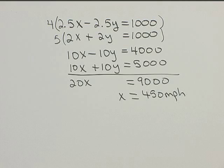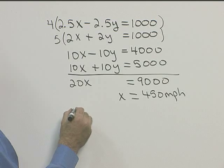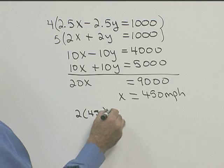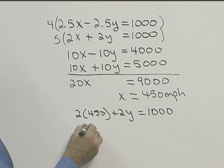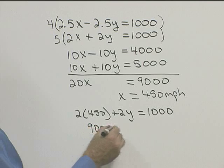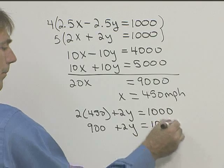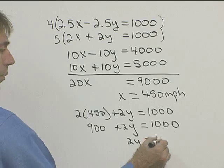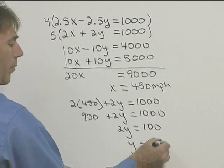Well now we need to find the speed of the wind. So let's take our second equation, which is 2X plus 2Y equals 1,000. So we'll have 2 times 450 plus 2Y is equal to 1,000. We'll have 900 plus 2Y is equal to 1,000. Subtracting 900 from both sides, we get 2Y is equal to 100. So Y is equal to 50 miles per hour.